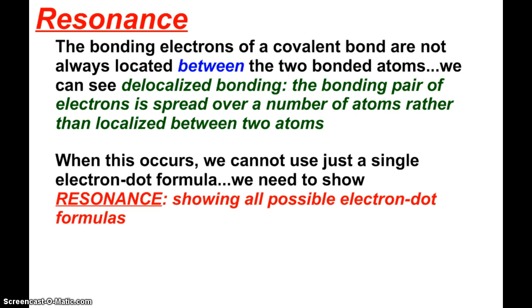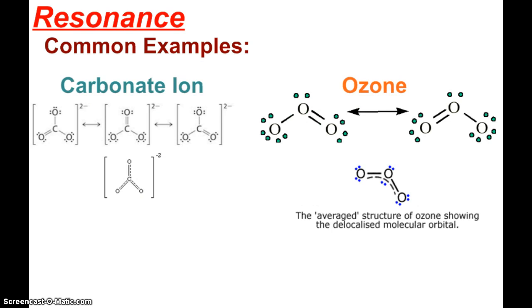When this is happening, we can't just use a single electron dot formula. We need to show what's called resonance, showing all of the possible electron dot formulas. So here's some common examples.